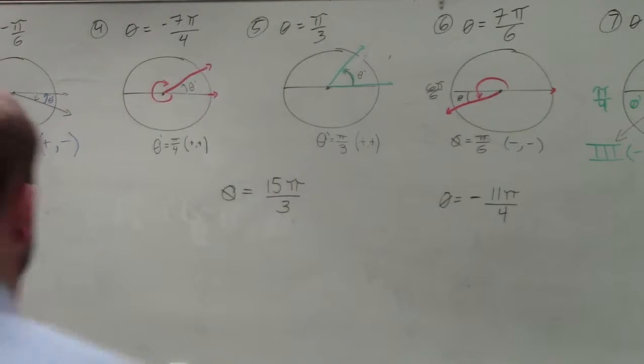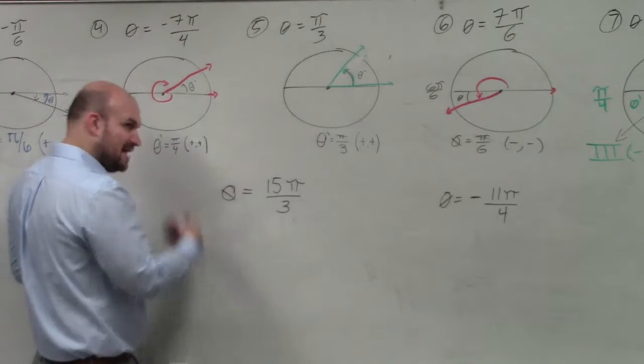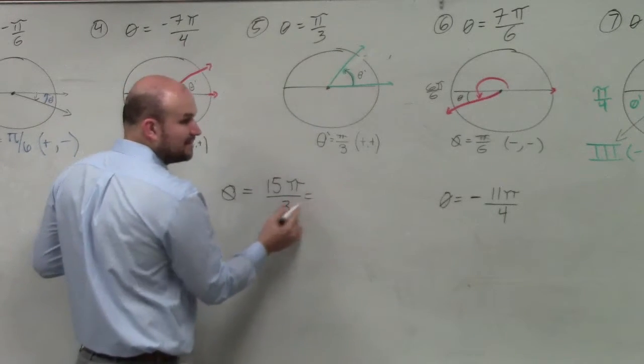So if I was going to be graphing this, I know breaking this up into 5 thirds, that's kind of going around the circle quite a bit. So what I can do is I'm going to rewrite this.